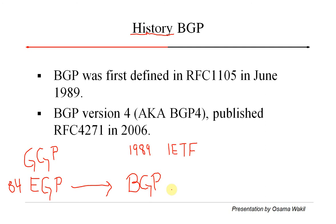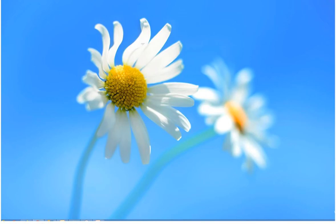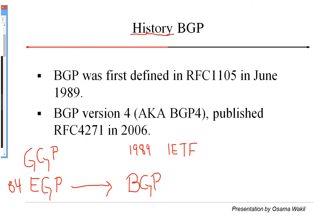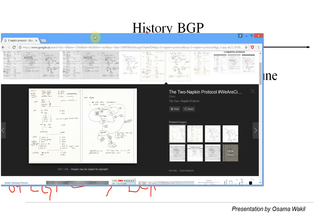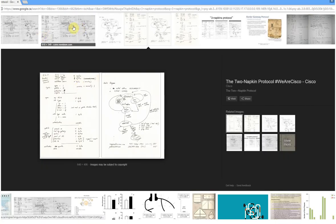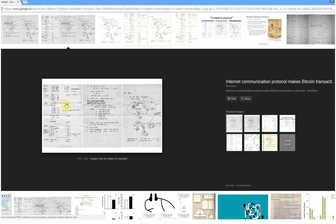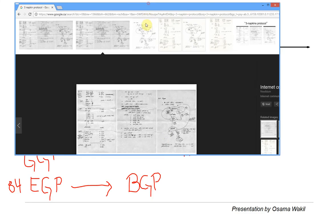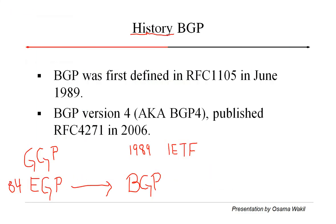Initially they worked on a plan that was basically written down on a piece of napkin. If you search on the internet for '3 napkin protocol' or '2 napkin protocol,' you will see images — these are the original napkins where they drafted out the entire protocol. The screenshot shows the original napkins, which appear to contain the state diagram used for the BGP protocol. It's very interesting that such a great protocol, one that is running the entire internet, was drafted on three pieces of napkin.